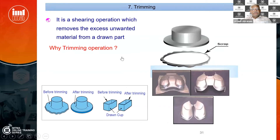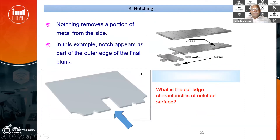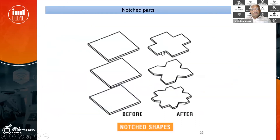What is a trimming operation and why do we do trimming operations? Especially after deep drawing, the outside of the part will not have a regular form, so we do trimming. Then there is a notching operation and a collar drawing operation.